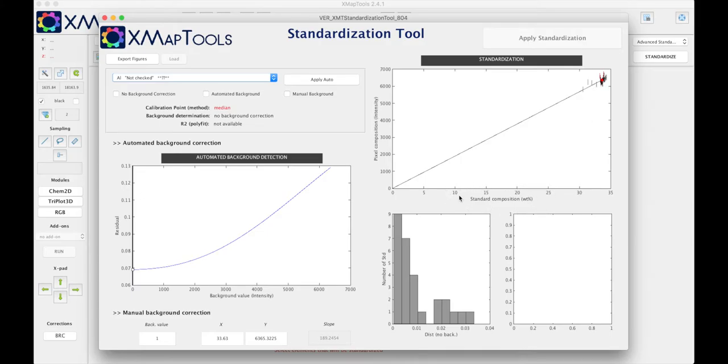This diagram shows the standard composition of the spot analysis against the pixel composition in x-ray intensity of the corresponding pixels for the element selected in this menu.